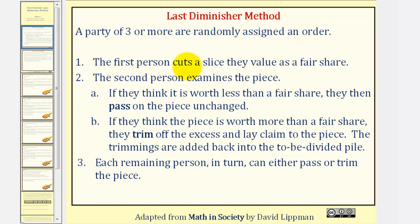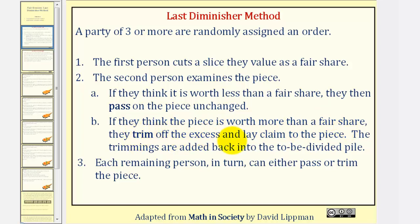Step one: the first person cuts a slice they value as a fair share based upon their value system. Step two: the second person examines the piece. If they think it is worth less than a fair share, then they pass on the piece unchanged. If they think the piece is worth more than a fair share, they trim off the excess and lay claim to the piece. The trimmings are added back to the to-be-divided pile.